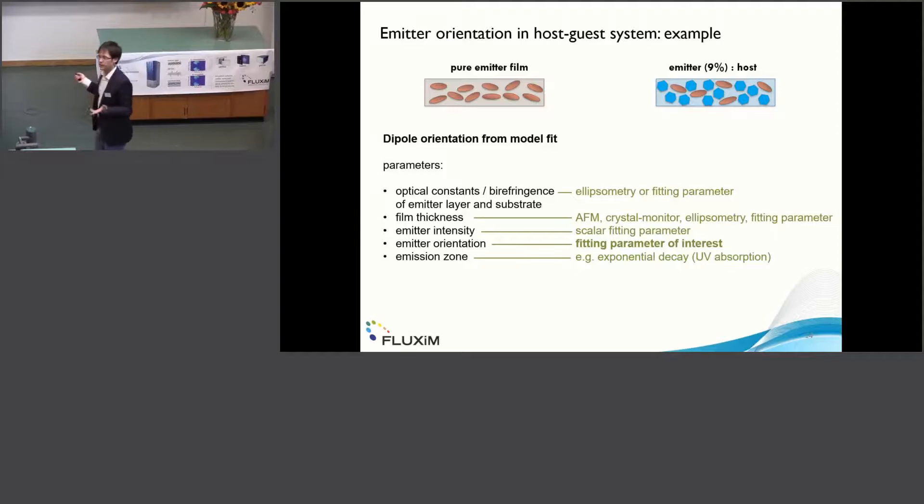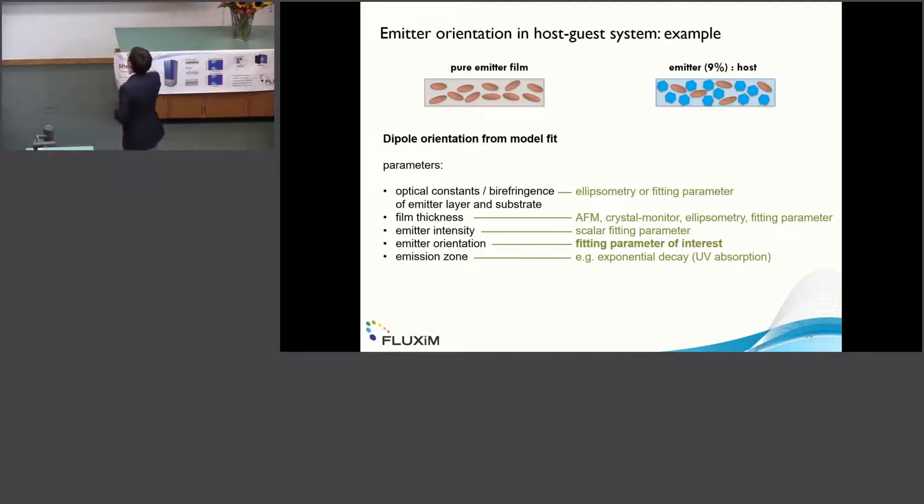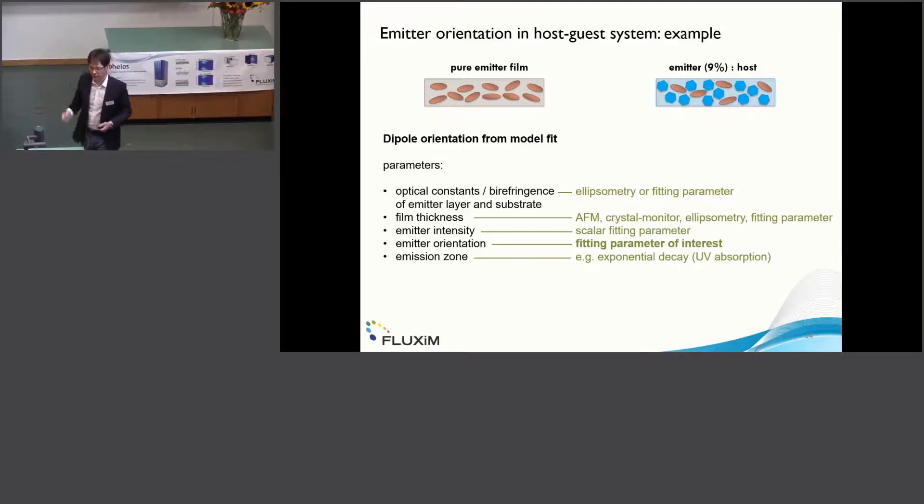Then what we do is we take our full optical model, and of course we have a couple of parameters. First of all, we need to know the optical constants. Typically we get them exactly from ellipsometry, or we use them as a fitting parameter. Then we have the film thickness which can be determined from AFM, or it can also be a fitting parameter. Then we have the emission intensity which just scales our signal up and down. The most important is the emitter orientation. But also we need some assumption about the emission zone, but typically we just take an exponential decay from the side where we actually illuminate with the UV light.